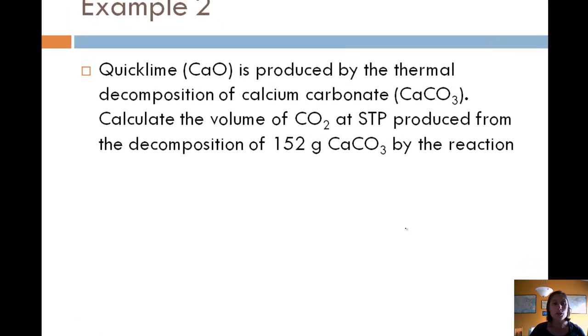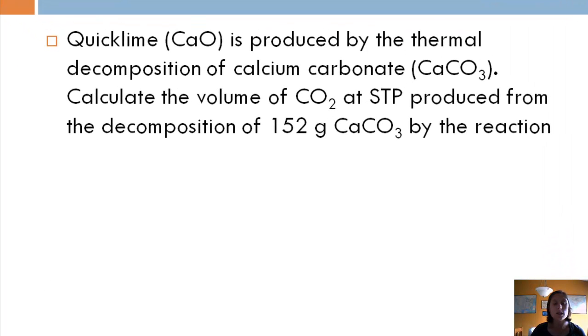Okay, so let's do some stoichiometry. So we have quicklime, which is calcium oxide, produced by the thermal decomposition of calcium carbonate. Calculate the volume of CO2 at STP produced from the decomposition of 152 grams of calcium carbonate by the reaction. Okay, and here's our reaction. First of all, it looks balanced, so we're all set there.